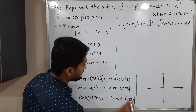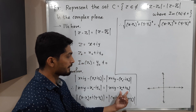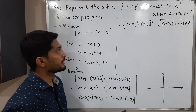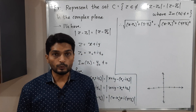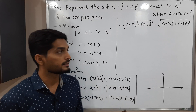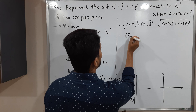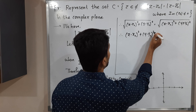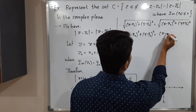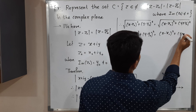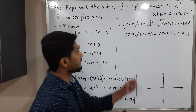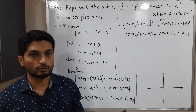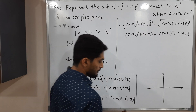Note that on the right-hand side, the imaginary part is (y + y₀), with a plus sign. Squaring both sides to remove the square roots, we get: (x - x₀)² + (y - y₀)² = (x - x₀)² + (y + y₀)². The (x - x₀)² term appears on both sides and can be cancelled.